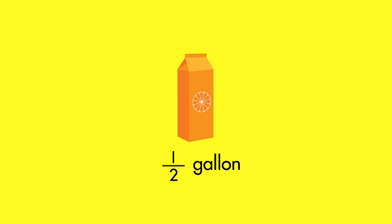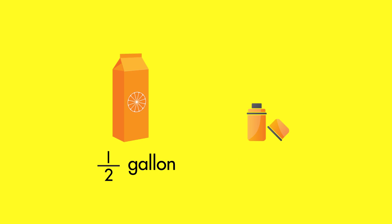You have a half-gallon jug of orange juice. Your drink container holds only one-eighth of a gallon. How many one-eighth-gallon drinks can you get from your half-gallon?